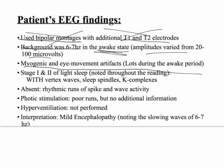Myogenic eye movement artifacts: your EEG is picking up the electrical activity of your brain, but you're also going to have electrical activity from muscle movement, and you get artifacts if you move. You're not supposed to move during an EEG reading, but if your eyes move, if you twitch, if your face moves, it's going to pick those things up.